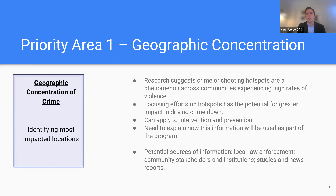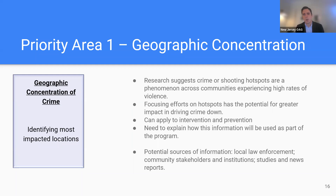Hotspot focus can apply to both intervention and prevention — it probably lends itself a little more to intervention, but there are ways to array prevention effectively. That's really the challenge: to explain how this information will be used as part of the program. Potential sources of information about crime hotspots could be from local law enforcement, community stakeholders and institutions such as public health agencies, local research institutions, or studies and news reports.